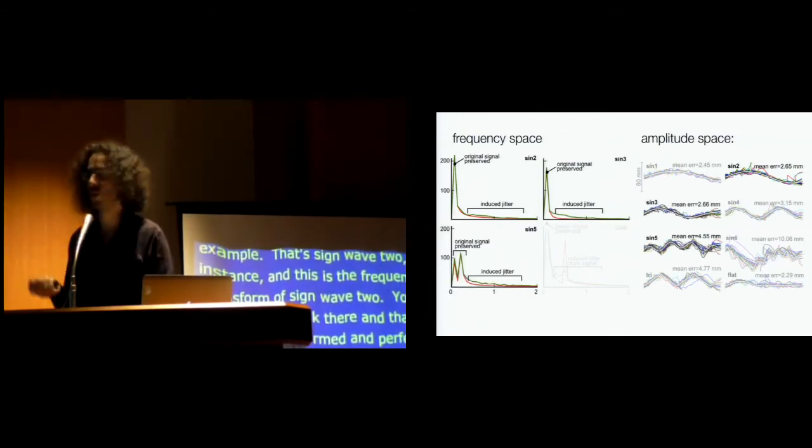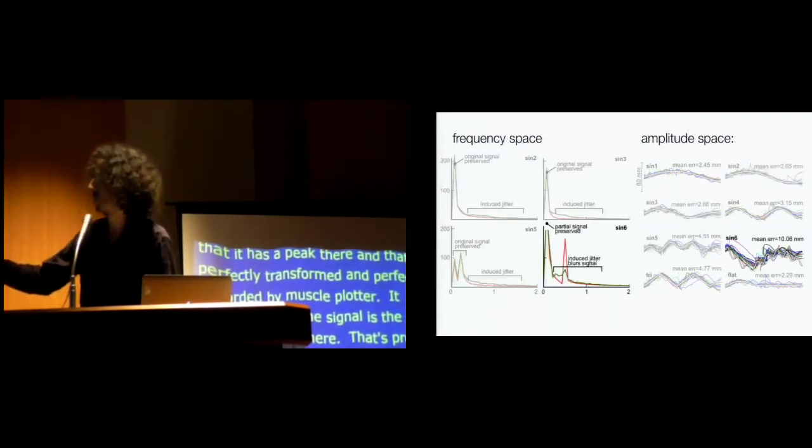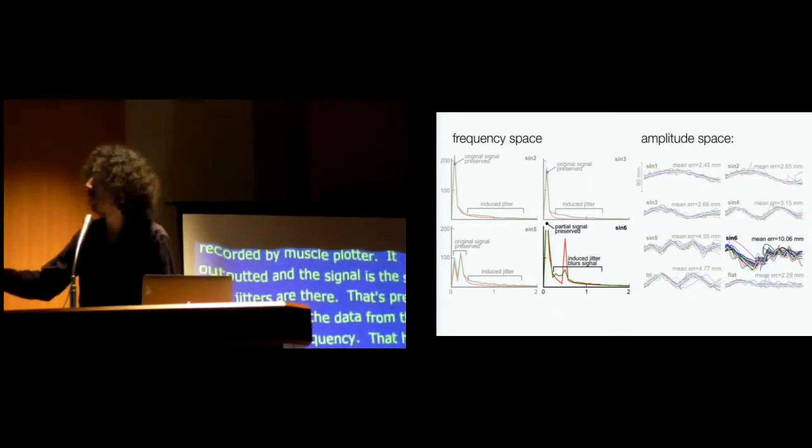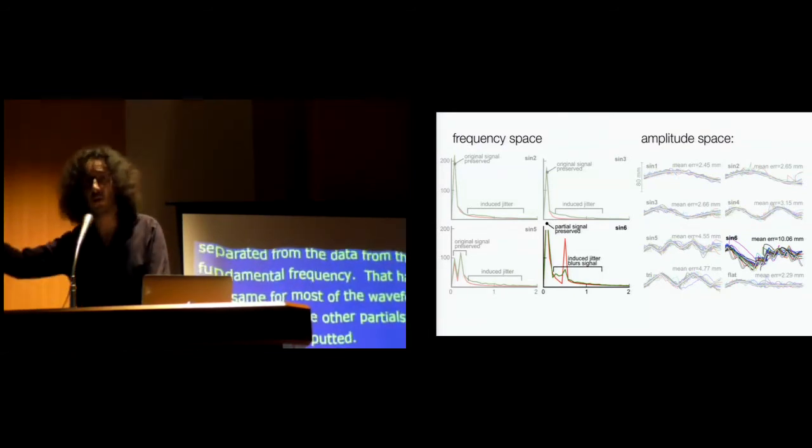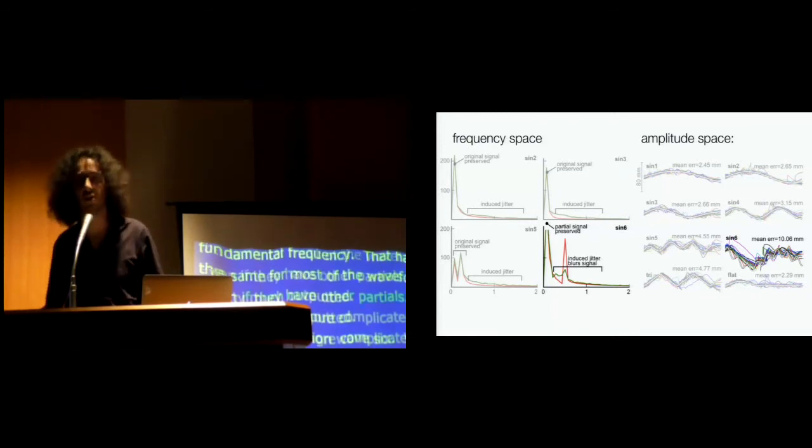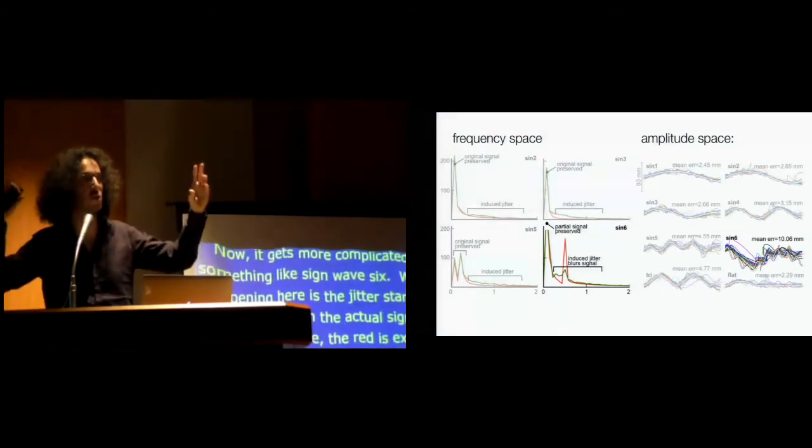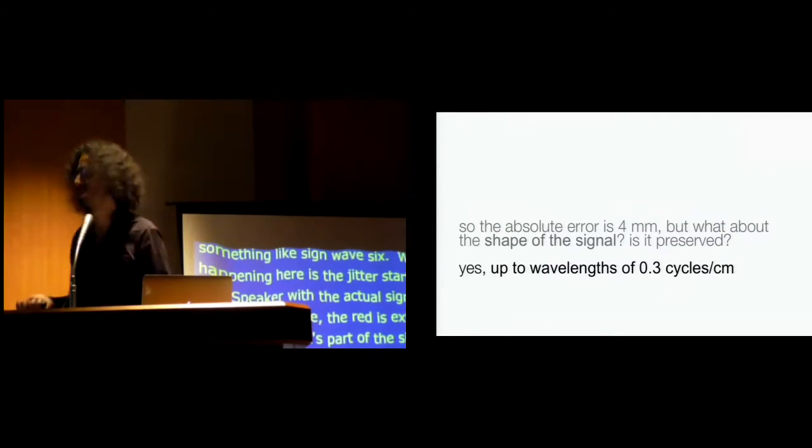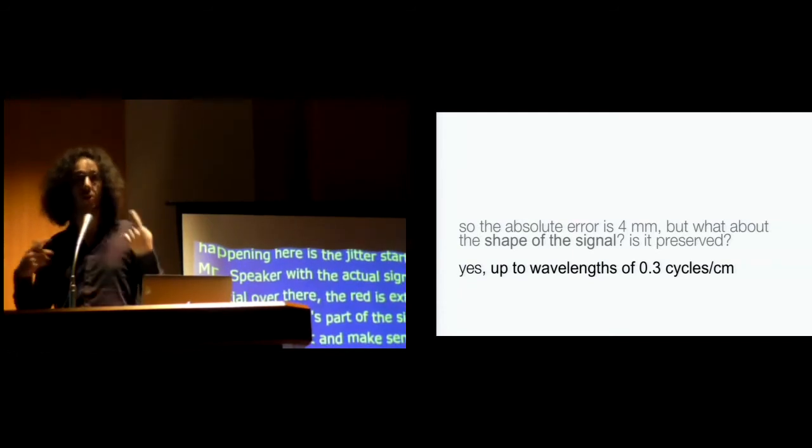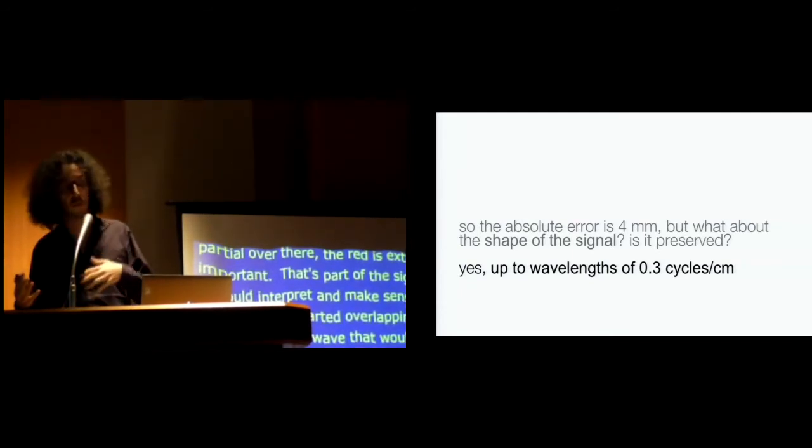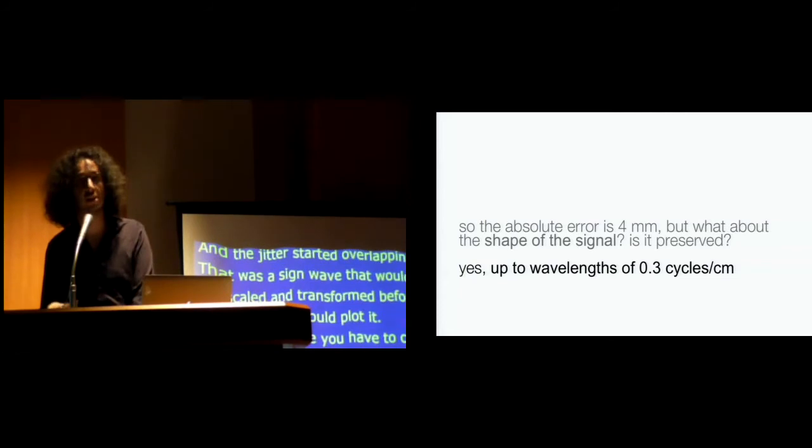This was not present at the user study time. That came as a sort of realization of what was happening here with all this jitter. The average error that you see over here is four millimeters. And that doesn't sound super bad, depending on your application. But the question is, if I'm drawing sine waves or if I'm trying to understand a math problem, it might be okay if my sine wave is four millimeters off. The problem is, is the jitter of muscle plotter creating artificial frequencies that I would then interpret as data? And that would be problematic. So we've got to look at the shape of the signal. And I can tell you that up to certain wavelength, which is 0.3 cycles of a waveform per centimeter, muscle plotter can render. So what does it actually mean? Let's take an example there. That's sine wave 2, for instance, over there. And this is the frequency transform of sine wave 2, just Fourier transform, very simple.